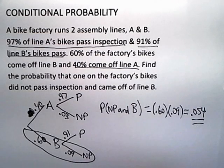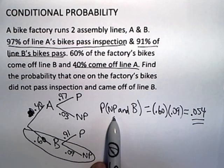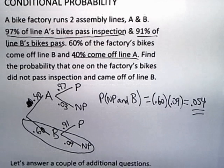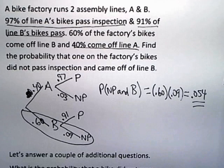So there's almost a 5.5% chance that that would happen. The probability of a bike not passing inspection and coming off of assembly line B. Now I want to ask a couple of other questions. Now that I've got this chart up here, it's sort of a shame not to use it to ask a couple more questions. So let's look at a couple more things.